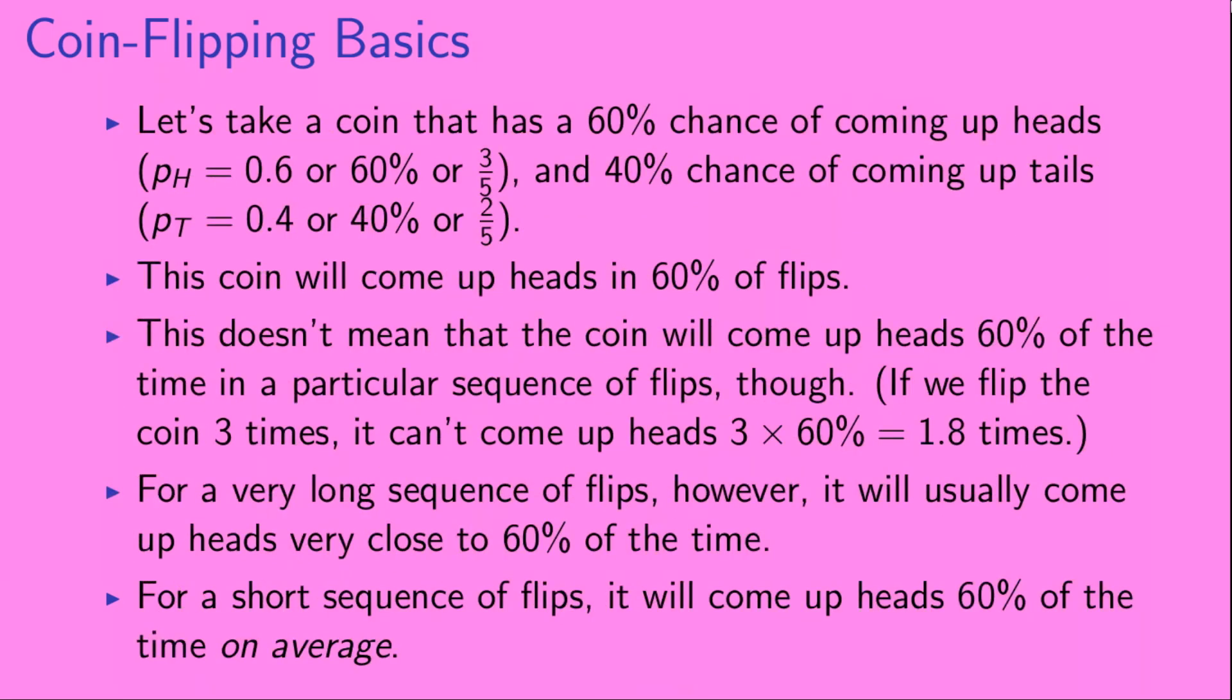So let's take a coin that has a 60% chance of coming up heads, so pH equals 0.6 or 60% or three-fifths, and a 40% chance of coming up tails, so PT equals 0.4 or 40% or two-fifths. This coin will come up heads in 60% of flips.